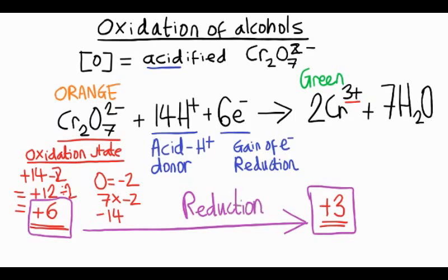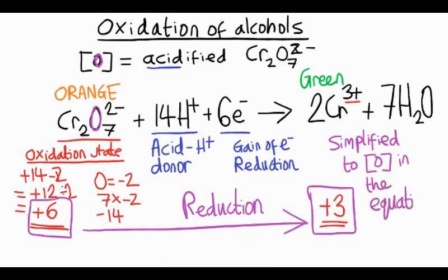Now, this is all very complicated. In the organic equations that we looked at before, we just use a simple O in square brackets. The oxygen comes from the oxygen in dichromate, and those oxygen atoms are added to either the alcohol or the aldehyde.